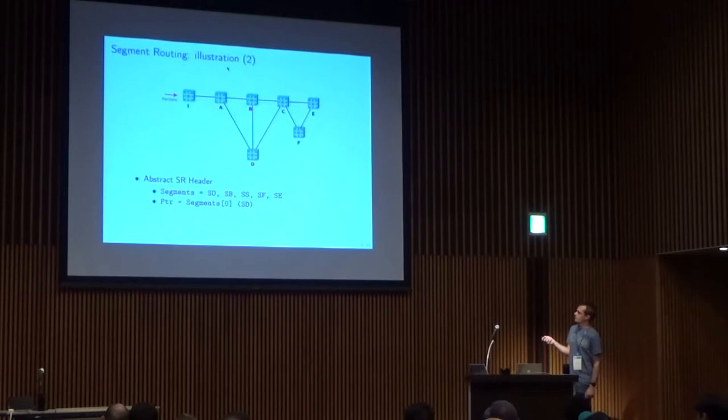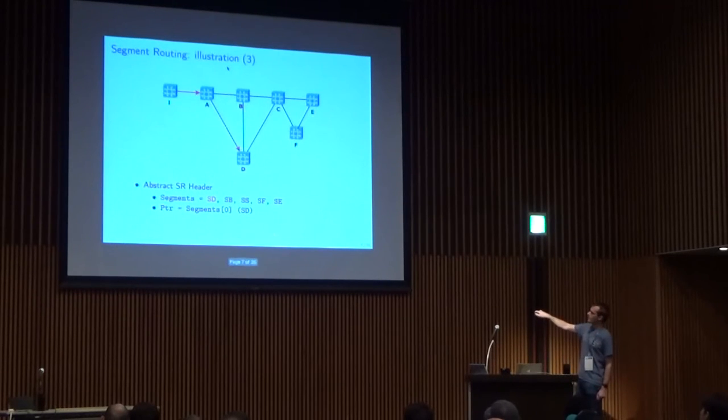First, what happens? We have the first segment which represents node D. The ingress node will insert that segment routing header and look at the first segment. The first segment represents node D, and the ingress router will simply route the packet through the shortest path, regular routing, to segment D.